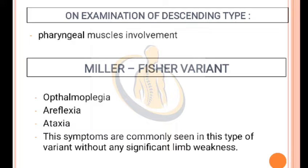Miller-Fisher Variant: The clinical features are ophthalmoplegia, areflexia, and ataxia. These symptoms are commonly seen in this variant without any significant limb weakness.